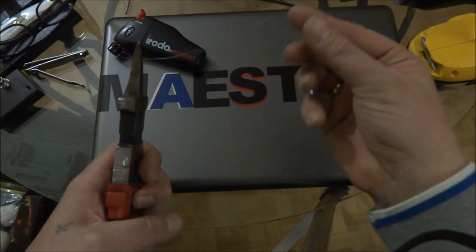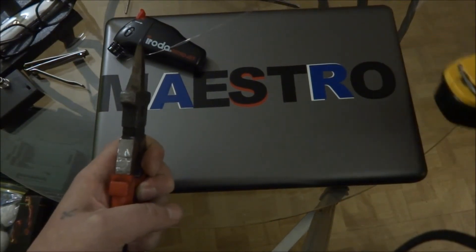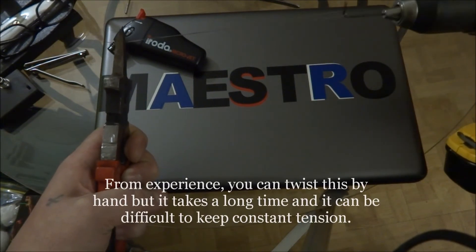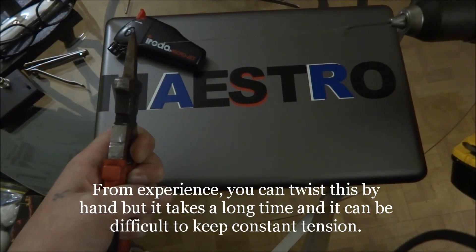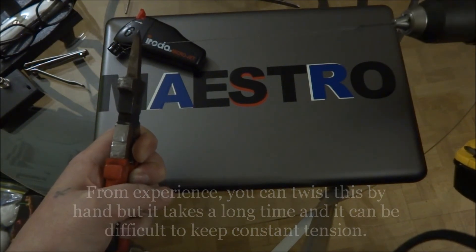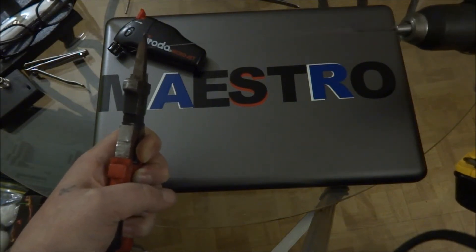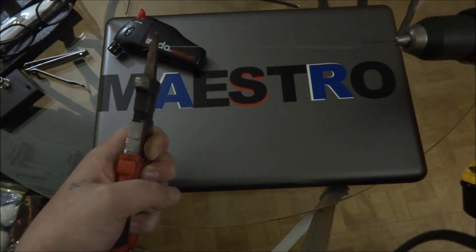And all you need to do is keep that on there and start twisting. You want to keep tension on this so you don't get any kinks in it. And I am just going to twist it up until one end breaks. And there we have it.